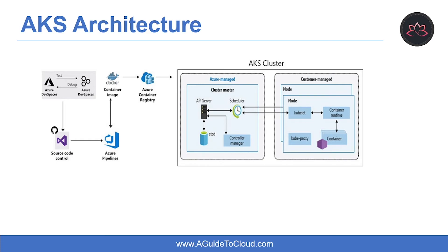In AKS, cluster master nodes provide the core Kubernetes services and orchestration of application workloads. The Kubernetes master components are part of the managed service provided by Microsoft. Each AKS cluster has its own single-tenanted dedicated Kubernetes master to provide the API server, scheduler, and so on. This master is managed and maintained by Microsoft.